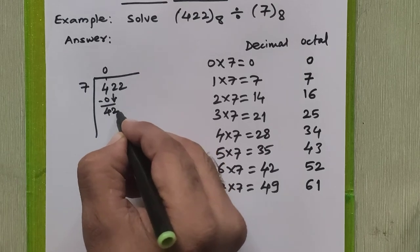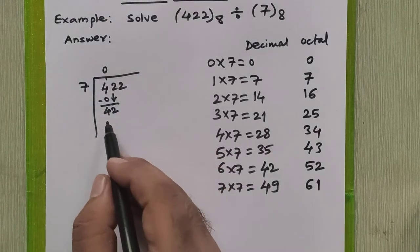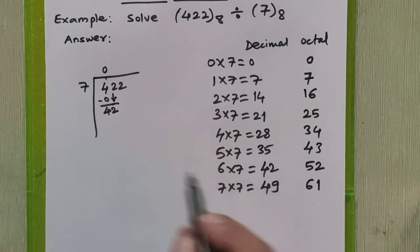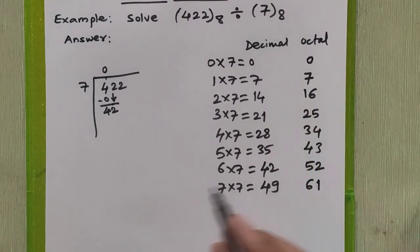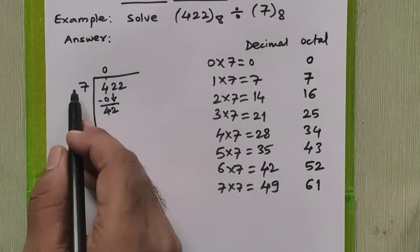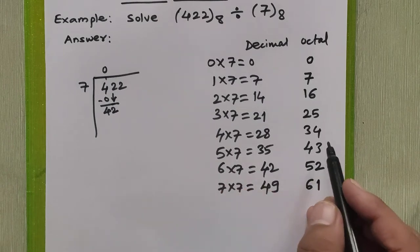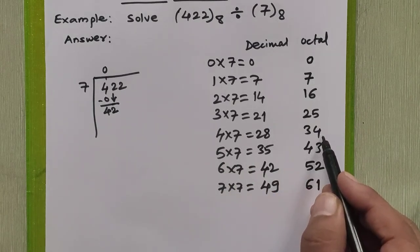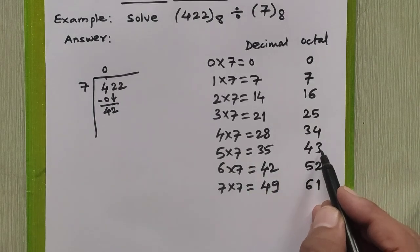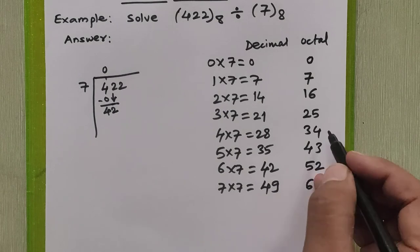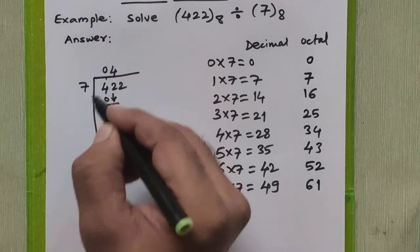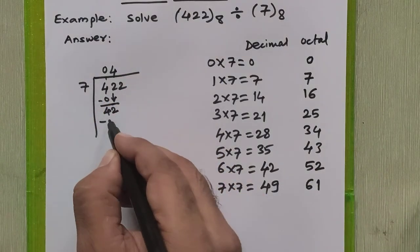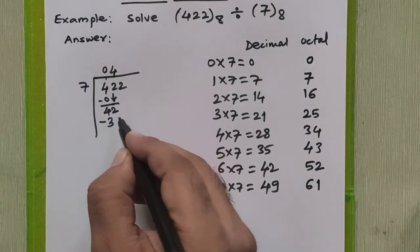Now we will bring down this 2 here, so it becomes 42 in octal. We will refer the table of 7. I want to divide 42 by 7. By which number can I divide? So it is 7 times 4 is 34 in octal, whereas 7 times 5 is 43 in octal. So this 34 can be subtracted, so I can write quotient as 4 here and I will subtract 34 from this.